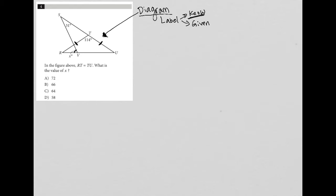Here's the other part of labeling with what you know. If the question tells me that RT is equal to TU, then that means triangle TRU is an isosceles triangle, which means that these two corner angles are congruent. Since the top angle here is 114 degrees...